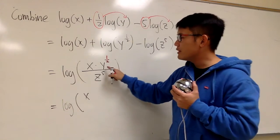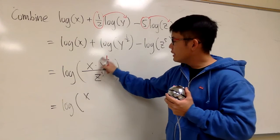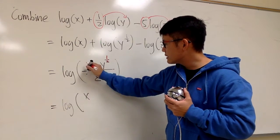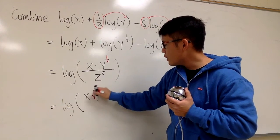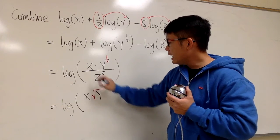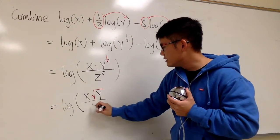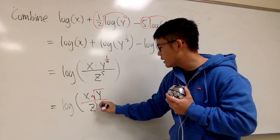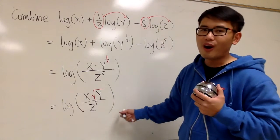So finally, we will have log of x—it's the same because the 1/2 is only for the y. This gives us x, and we multiply by the square root of y, and then we divide it by z^5. And we are done.